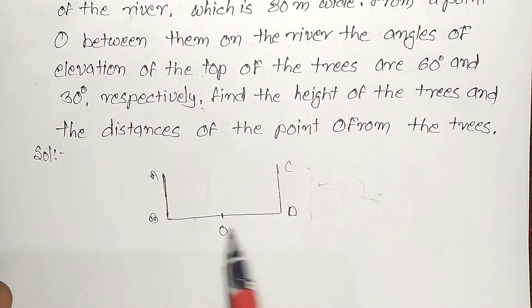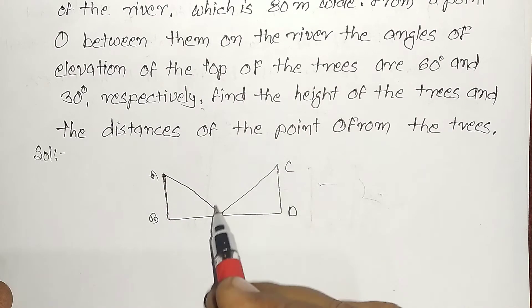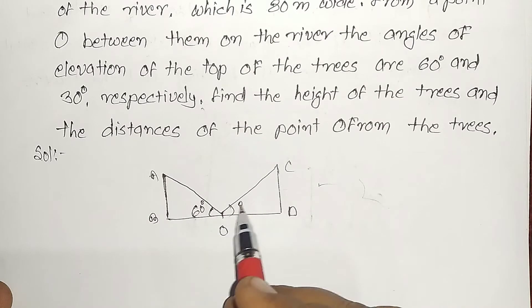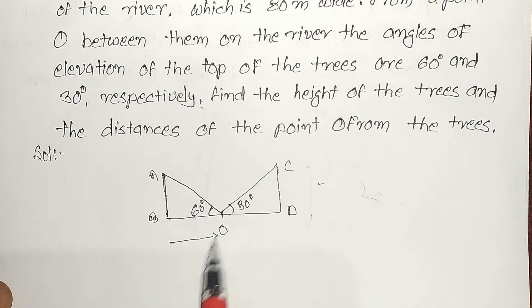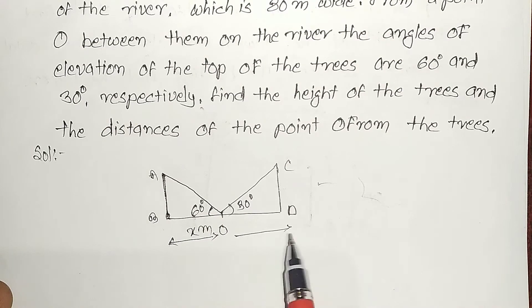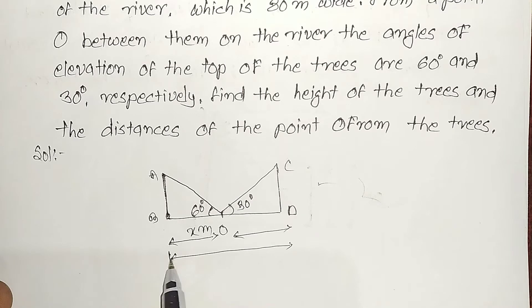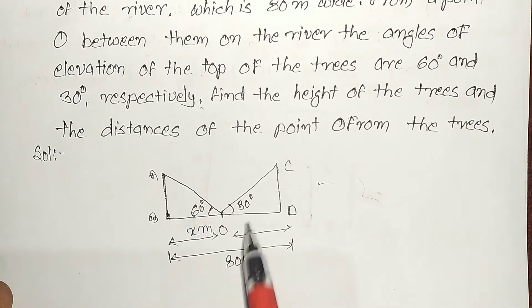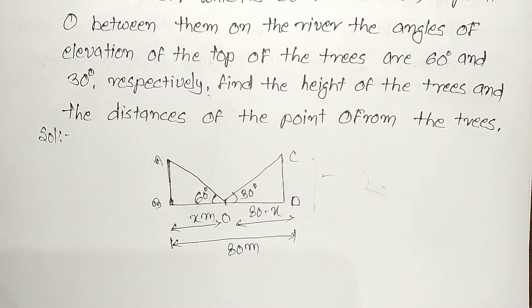This point O is in the middle of the river. The total distance is 80 meters, so this distance will be 80 minus x. This is the diagram which is question based.